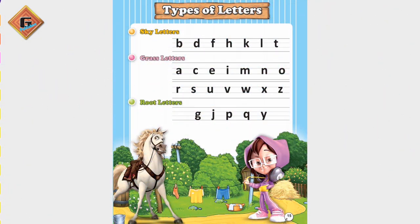This is page number 15 and the topic is types of letters. How many alphabets are there? There are total 26 alphabets. In ABC there are 26 letters. They start from A and end at Z. And these 26 letters are divided into three types.